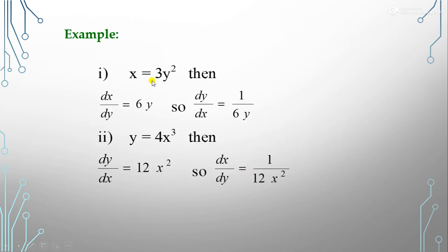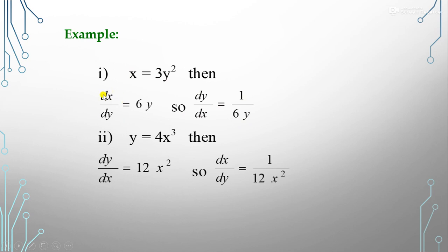For example, given x = 3y², find dy/dx. Since x is a function of y, we differentiate with respect to y: dx/dy = 6y. By the inverse function rule, dy/dx = 1 / (dx/dy) = 1 / (6y). So the differentiation dy/dx = 1/(6y).